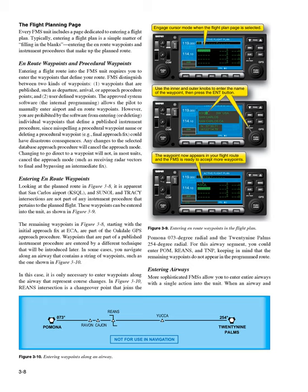One, waypoints that are published, such as departure, arrival, or approach procedure points; and two, user-defined waypoints. The approved system software — the internal programming — allows the pilot to manually enter airport and en-route waypoints. However, you are prohibited by the software from entering or deleting individual waypoints that define a published instrument procedure, since misspelling a procedural waypoint name or deleting a procedural waypoint — for example, a final approach fix — could have disastrous consequences.